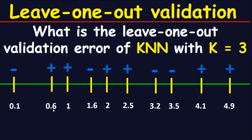Now let's move to the second point, which is 0.6. Look at the closest three points to 0.6 — they are 0.1, 1, and 1.6: negative sign, positive sign, negative sign. The majority of signs is negative. However, the original point we are looking for is positive, so this point is an error.